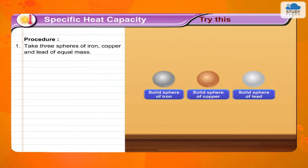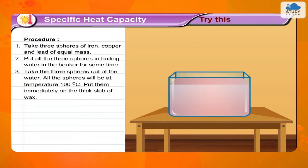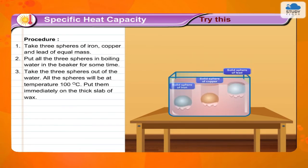Procedure: Step 1 — Take three spheres of iron, copper, and lead of equal mass. Step 2 — Put all three spheres in boiling water in the beaker for some time. Step 3 — Take the three spheres out of the water. All the spheres will be at a temperature of 100 degrees Celsius. Put them immediately on the thick slab of wax.